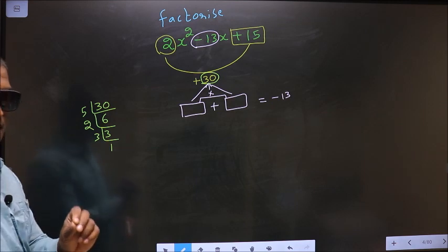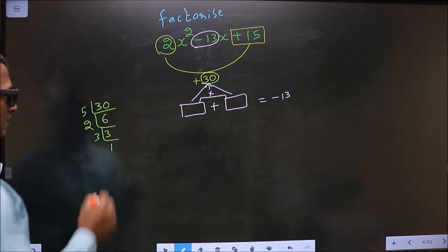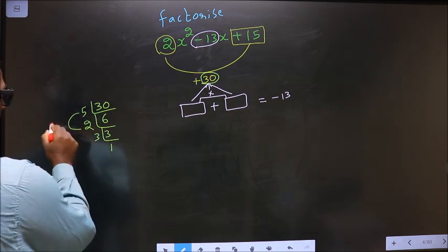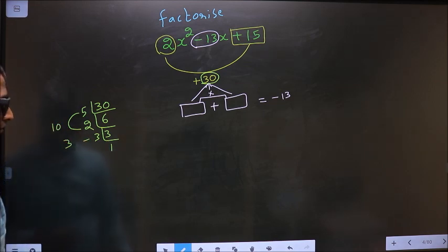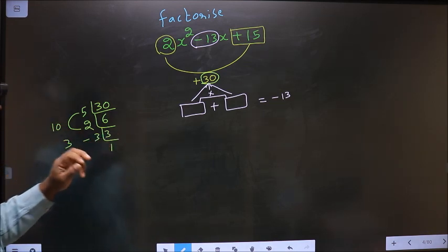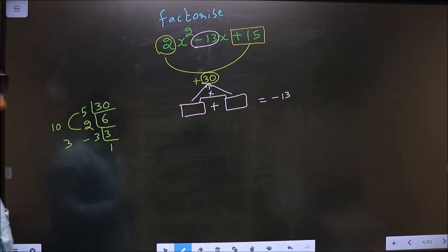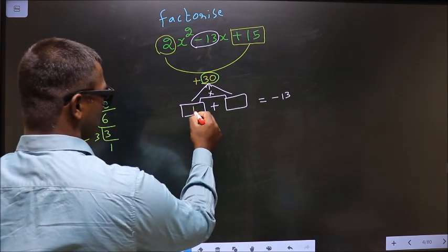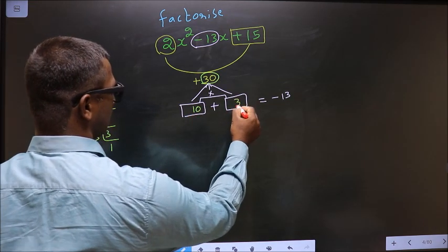So now the two numbers are 5 × 2 = 10 and 3. 10 + 3 = 13, 10 × 3 = 30.